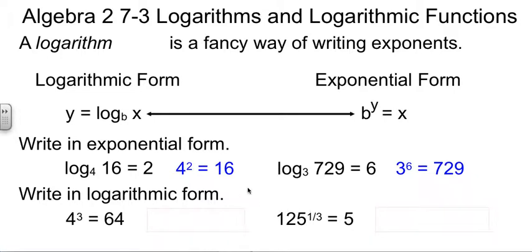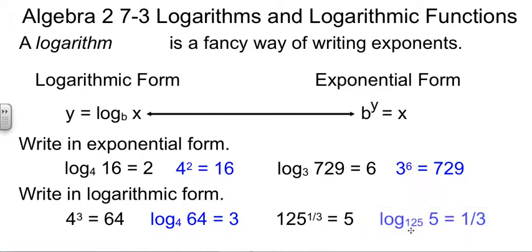We can go the other way as well — we can turn these into log equations, taking them away from being exponents. The base was 4, so the base of your log will stay 4. The 3 is the power, it moves over by itself. The 64 comes over to join the 4. And one more: we have 125 to the 1/3 equals 5. Your base in this case is 125, so it's the base of the log — not a log you see often, but it's possible. The 5 and the 1/3 trade spots; the 1/3 moves over by itself and the 5 comes over inside the log.